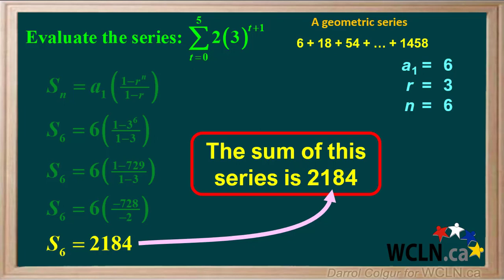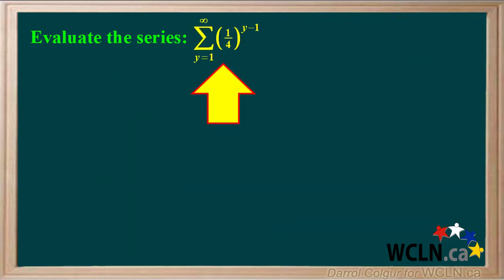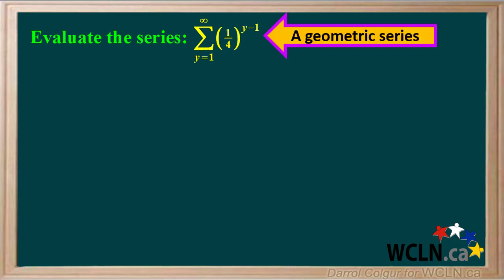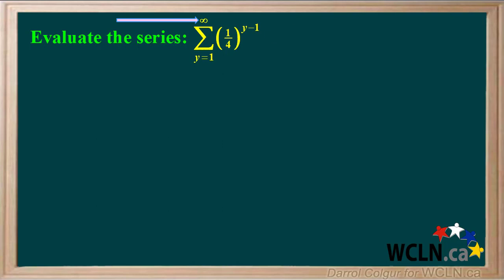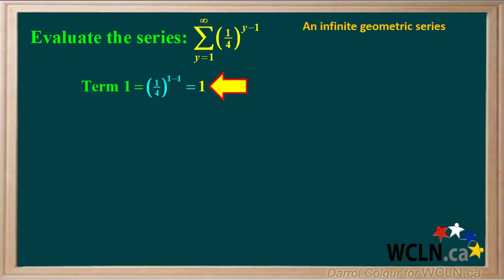Let's do one more example. We're asked to evaluate the series represented by this sigma notation. We see that there is a variable in an exponent, so this is a geometric series. And because y goes to infinity, this represents an infinite geometric series. We find the first few terms starting with y equals 1. Term 1 is 1 quarter to the power of 1 minus 1, or 1 quarter to the power 0, so the value of term 1 is 1.